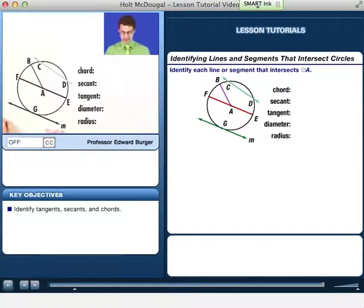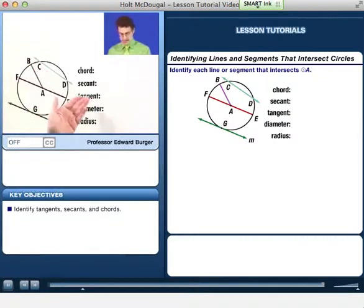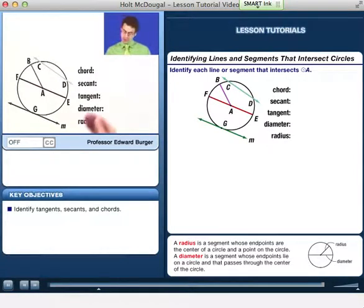Here I've got circle A. That means it's a circle centered at A. So A is the center, and I've got all these lines: a red line, a purple line, a green line, and a teal line. The question is, there are all these different vocabulary words: the chord, the secant, the tangent, the diameter, and the radius. Some of these I think we're pretty familiar with, for example, the diameter and the radius. But I want us to talk about what the other ones mean.